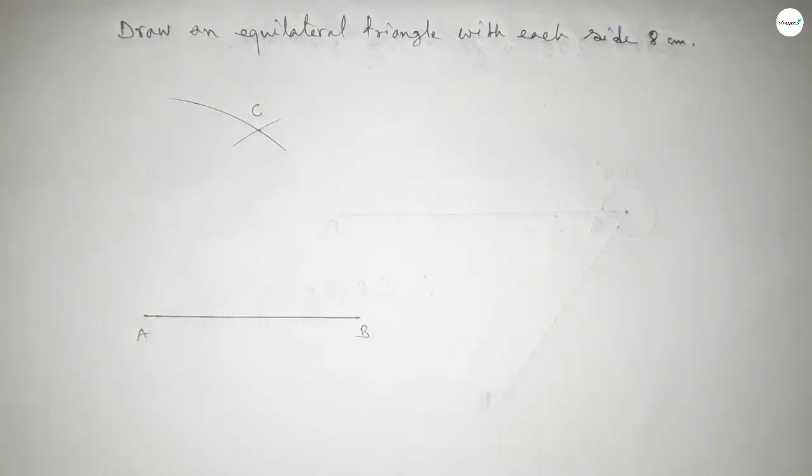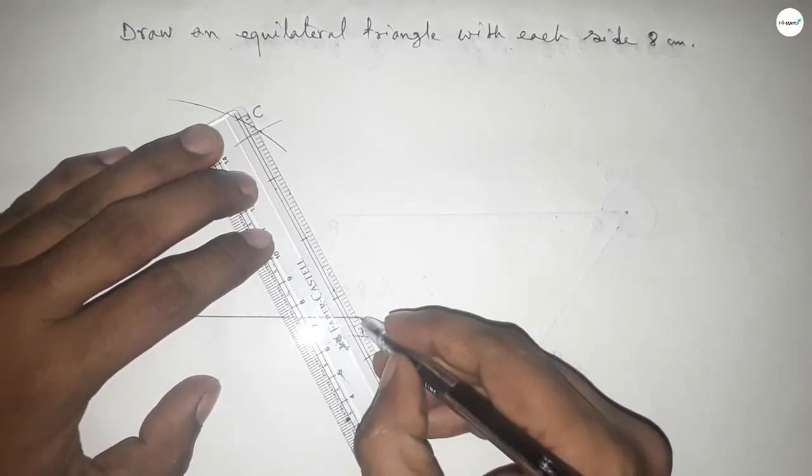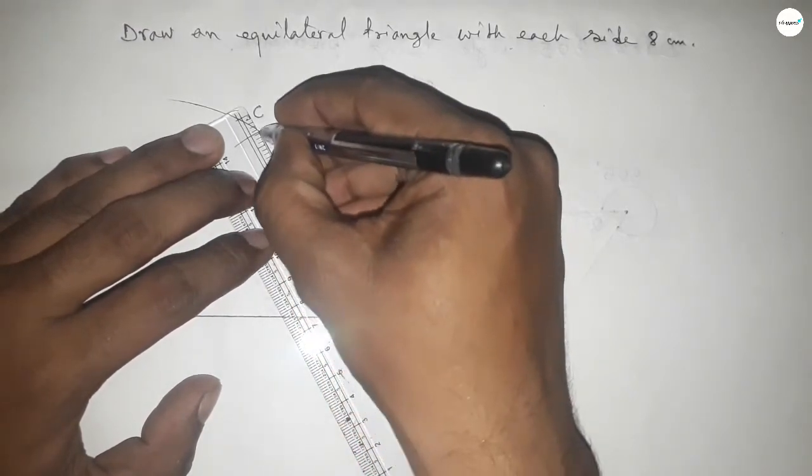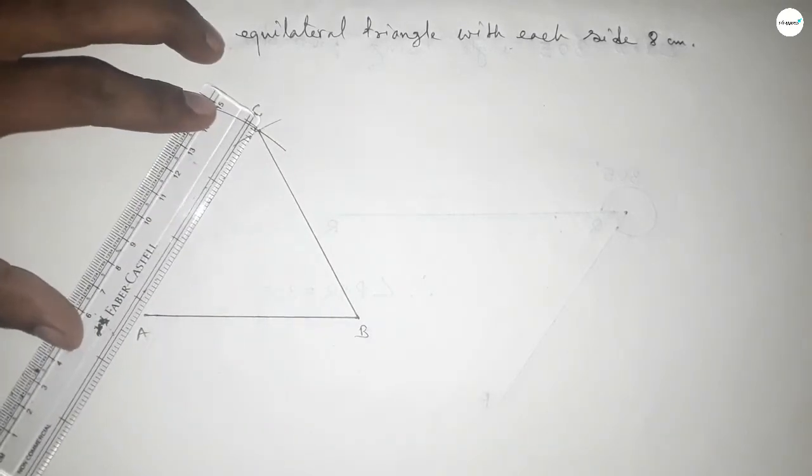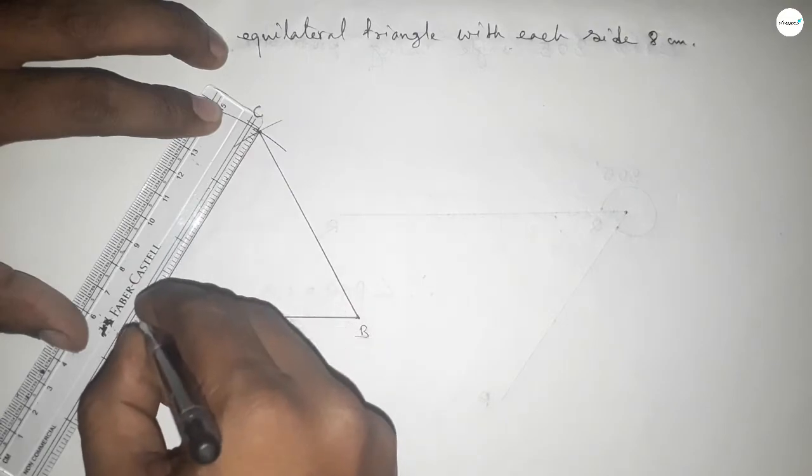Now joining this side and joining this side to get an equilateral triangle with each side 8 centimeter.